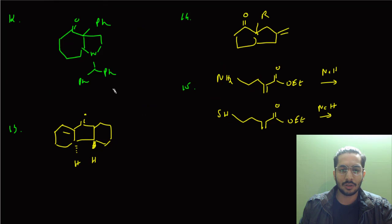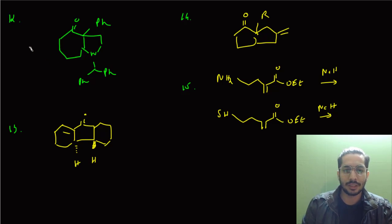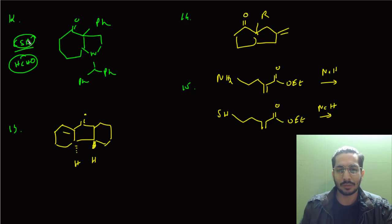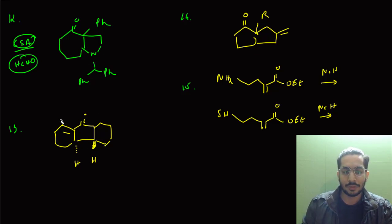There was another question — I don't remember the exact name of the reaction — but camphor sulfonic acid and formaldehyde were given to us. For that, some rearrangement will take place and we'll get a seven-membered ring and a five-membered ring.